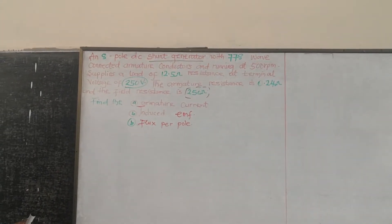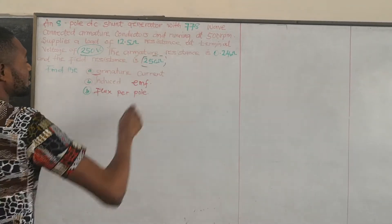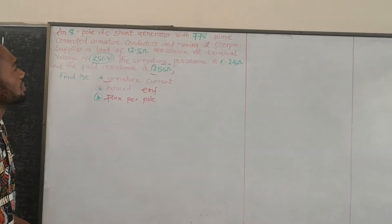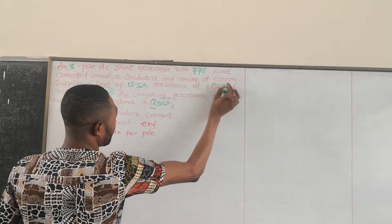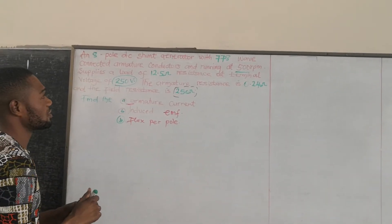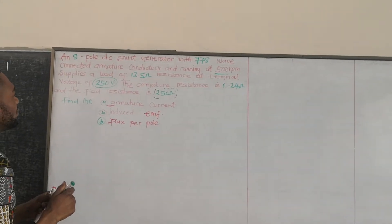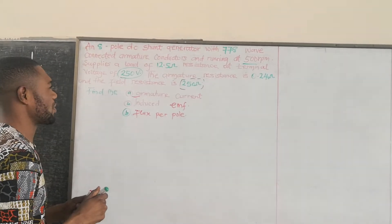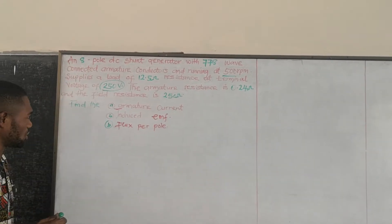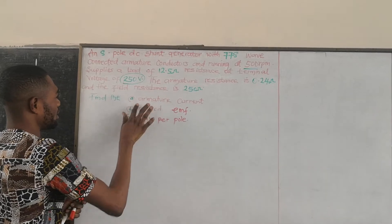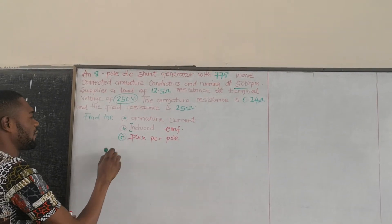We have a question about an 8-pole DC shunt generator with 778 wave-connected armature conductors. It ran at 500 RPM, applying a load of 12.5 ohms at a terminal voltage of 250 volts. The armature resistance is 0.24 ohms and the field resistance is 250 ohms. The question asks: find (a) the armature current, (b) the induced EMF, and (c) the flux per pole.